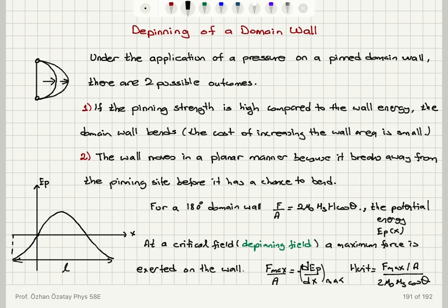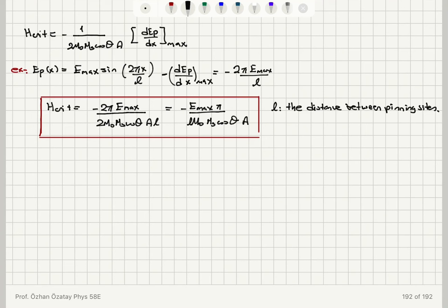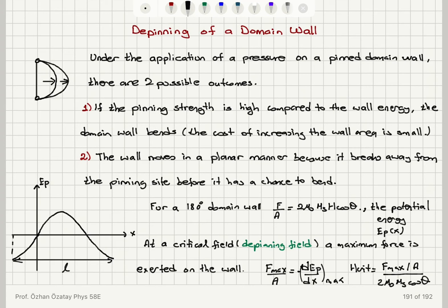These will be our Barkhausen jumps — when we have this magnetic field applied, the wall will be depinned from one pinning site and then move to the next pinning site, and so on. When we have a domain wall pinned between two pinning sites, if the pinning strength is too strong, the domain wall may just bend. Or if the magnetic field is high enough, it may break away from the pinning sides and start moving.